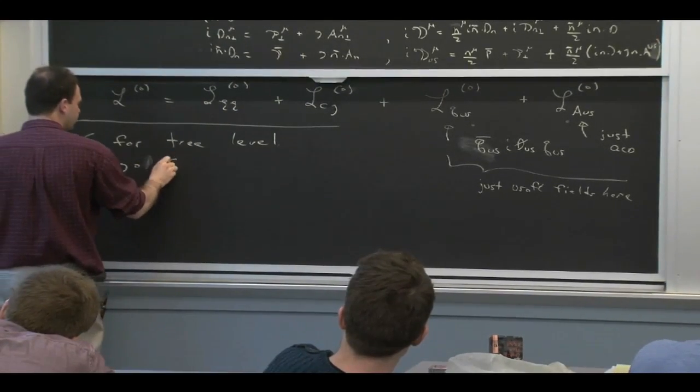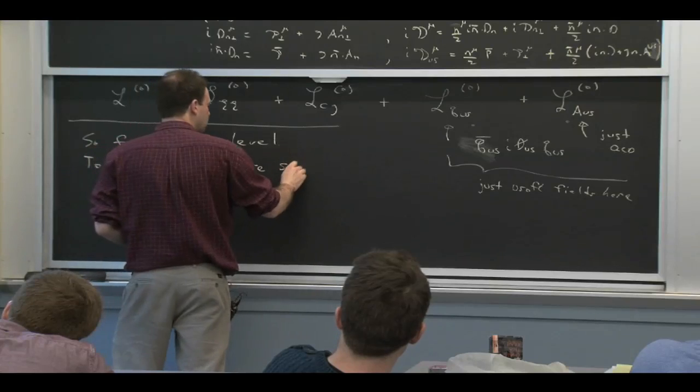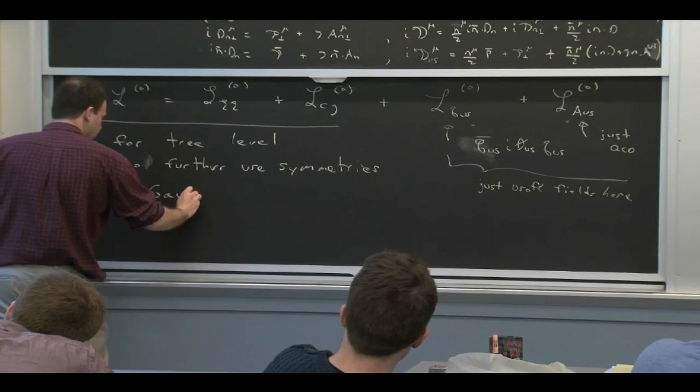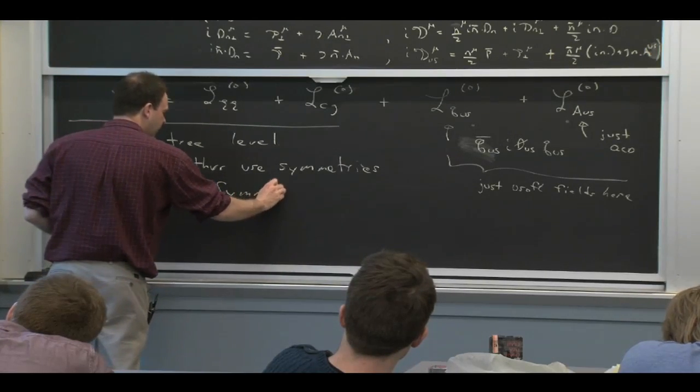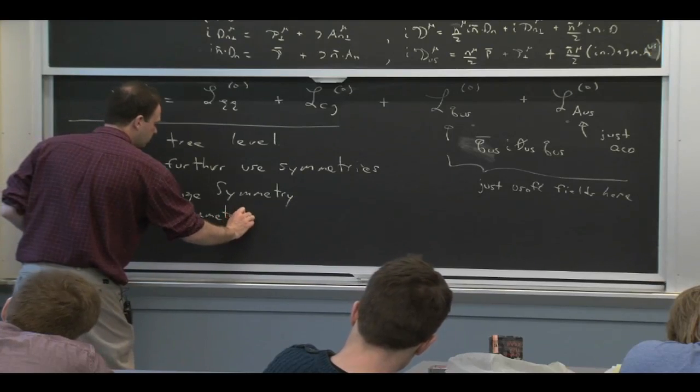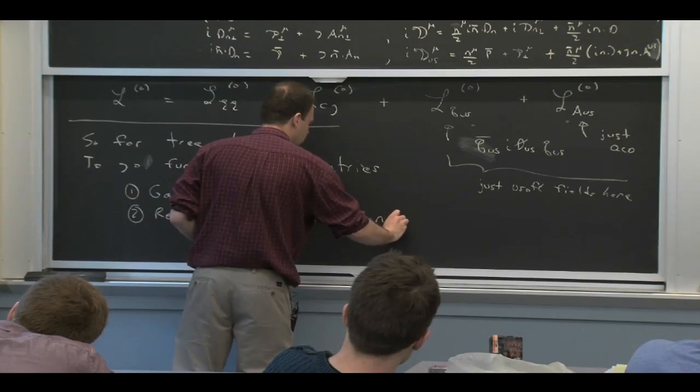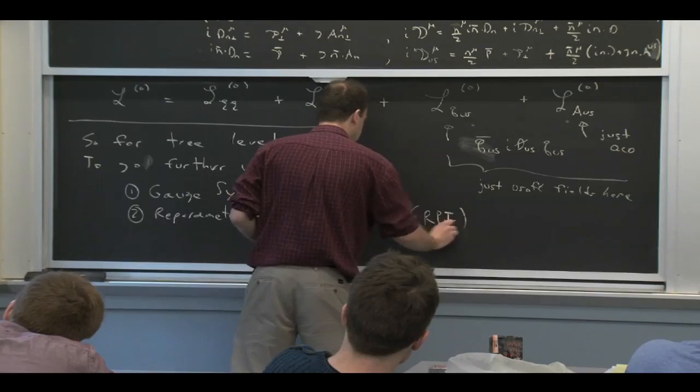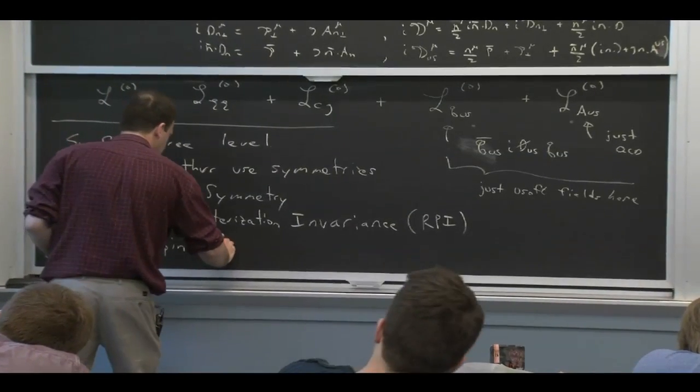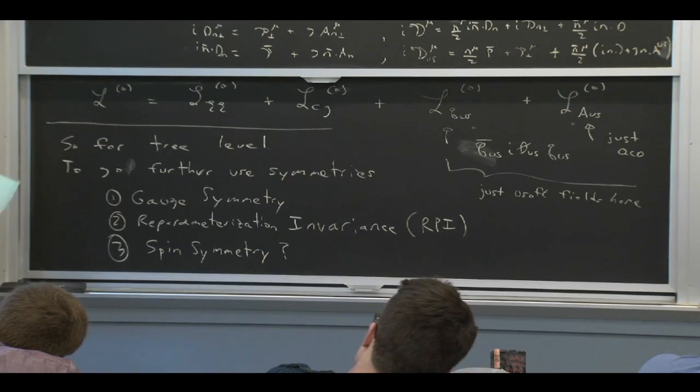So to go further, we'll use symmetries. We're actually going to consider three different symmetries: gauge symmetry, which I've been promising you for a while, reparameterization invariance, and spin symmetry, where I'll put a question mark by this last one because we need to answer the question whether there even is a spin symmetry.